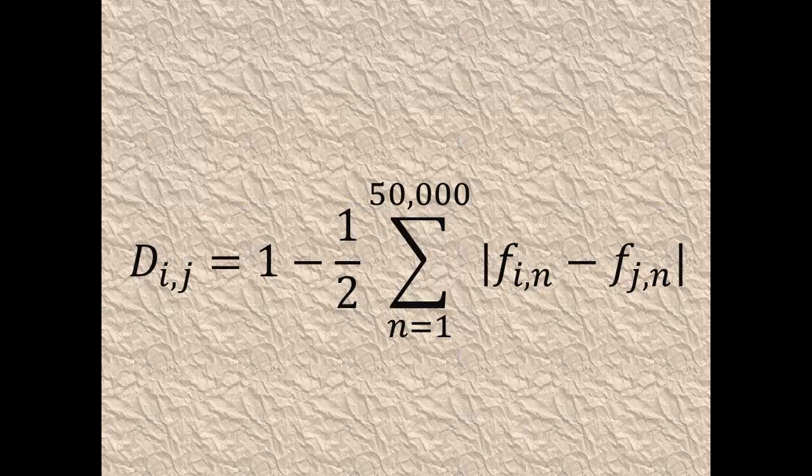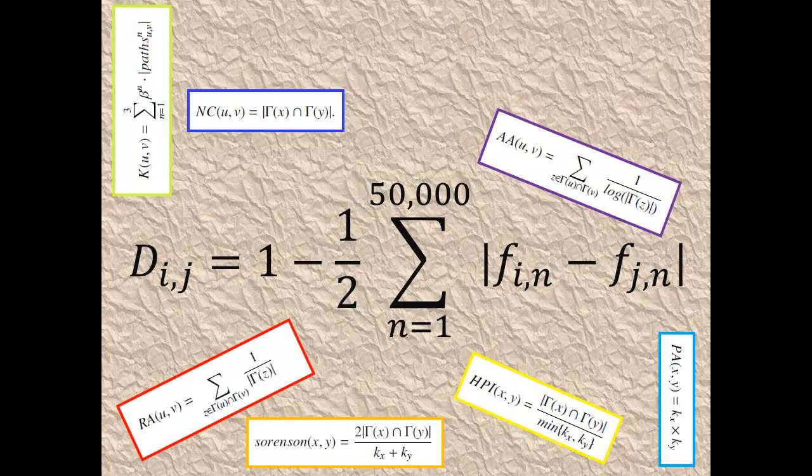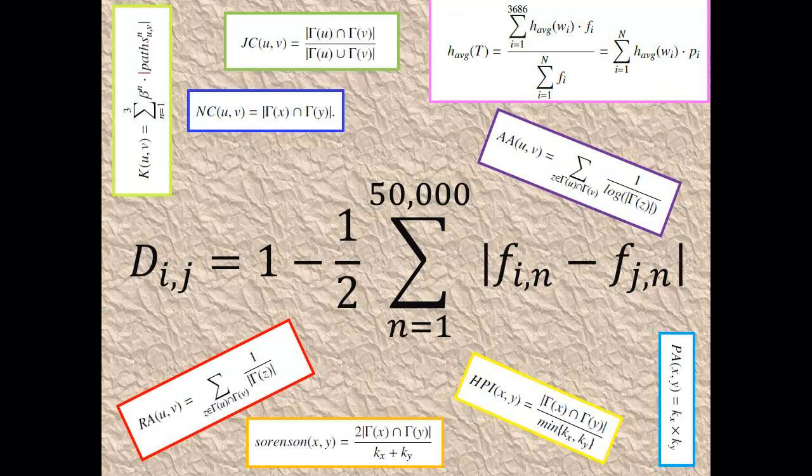So you might be wondering how we did this. Well, we looked at pairs of users in our network and measured things like how similar are the words that they're using in their tweets. We then threw in a bunch of other indices that other researchers have found to be helpful for link prediction in various types of networks.